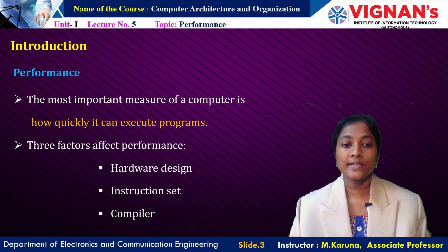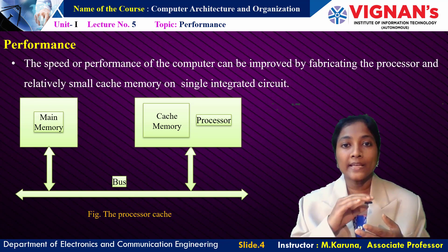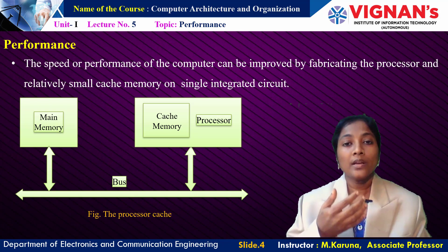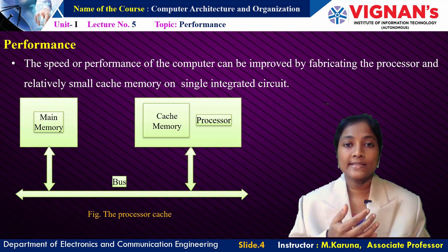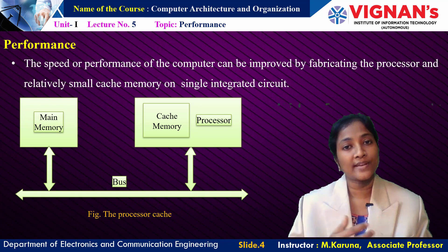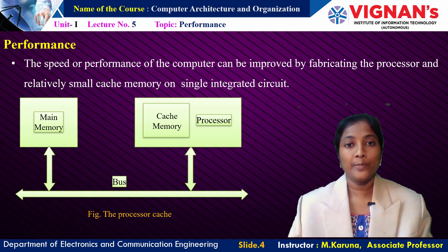Coming to hardware design: if a small cache memory is incorporated with the processor on a single chip, then performance can be improved. The processor can access cache memory more quickly than main memory, so the memory access time is reduced, the speed of operation is increased, and the performance of the system is improved.